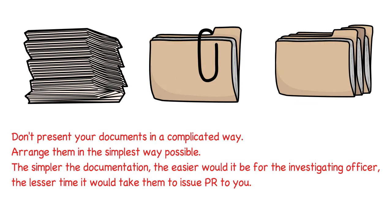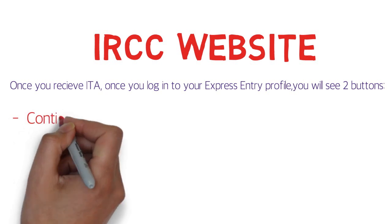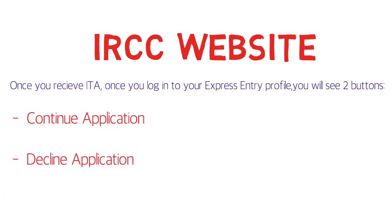After you get the ITA, you can log in to your Express Entry profile. You will see two buttons: the first is to continue the application and the second is to decline. If you click on continue application, you'll get to see all the buttons from which you can upload those documents.